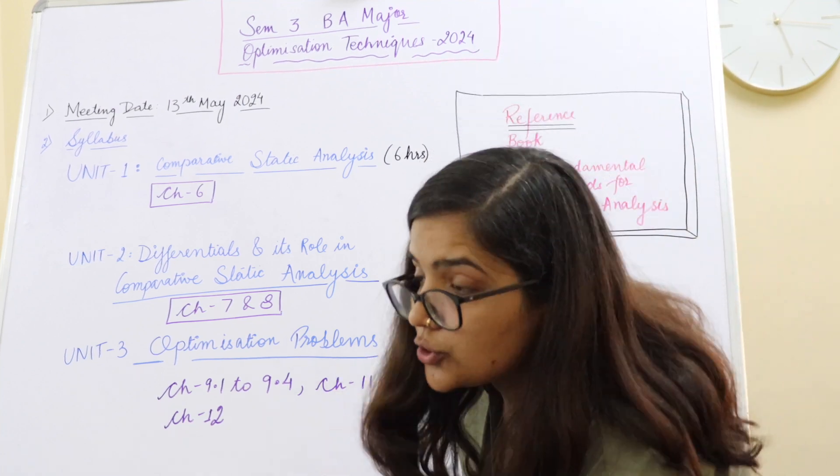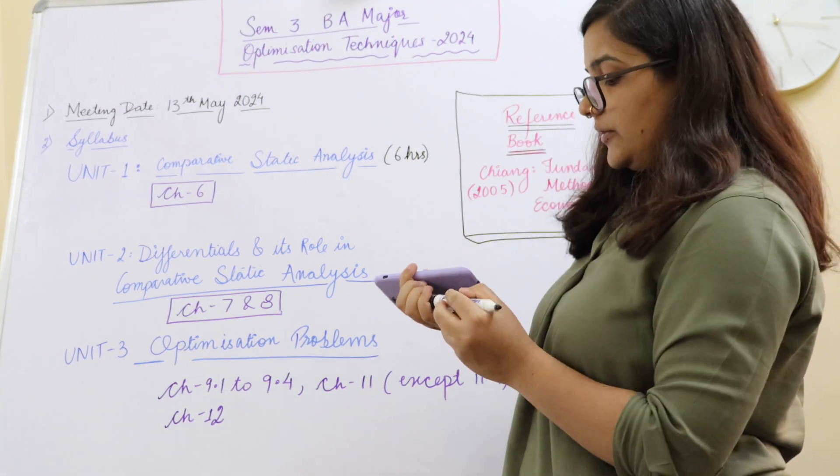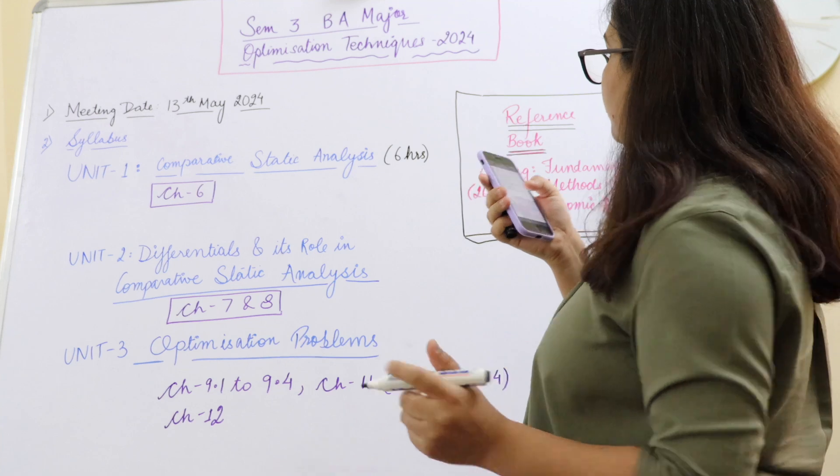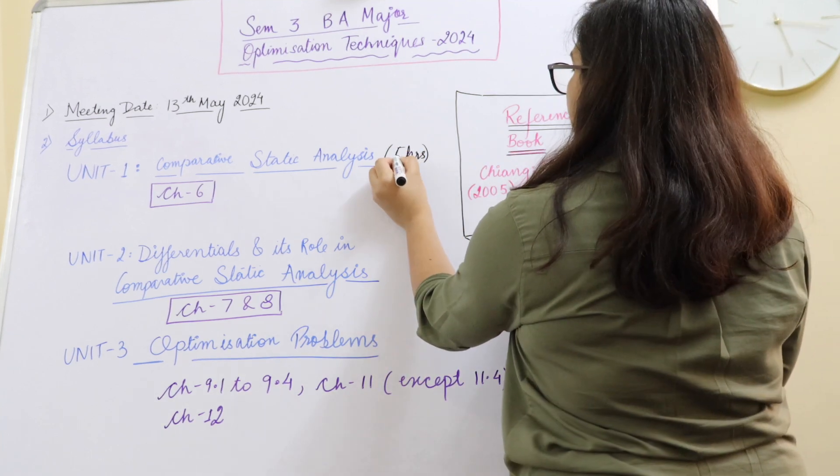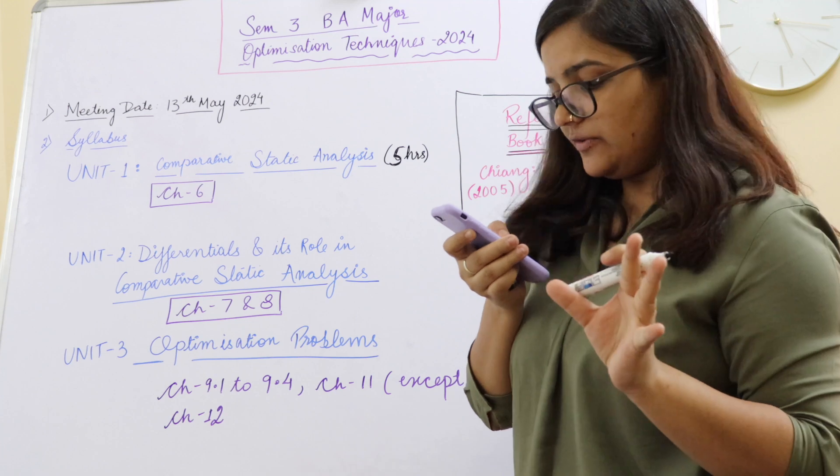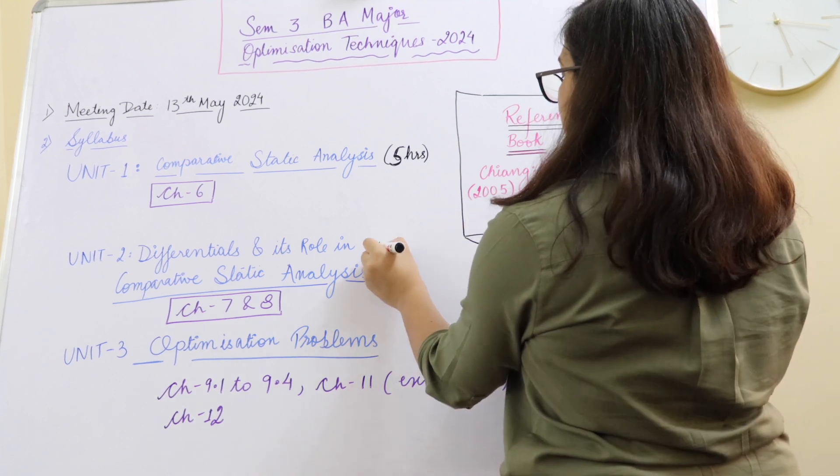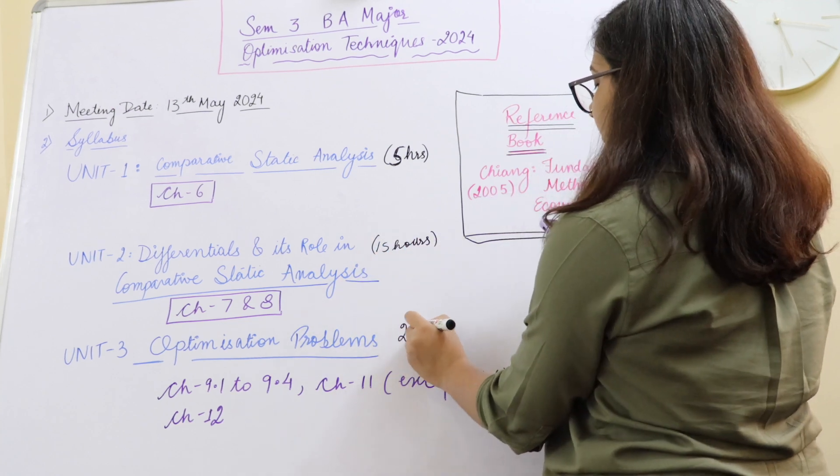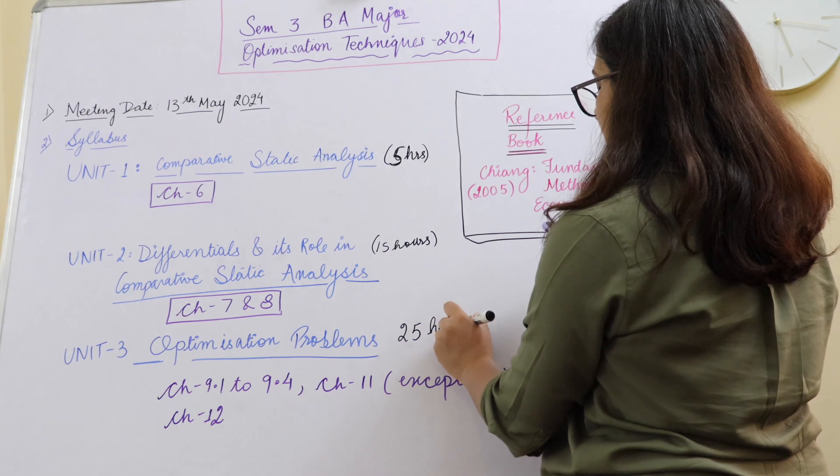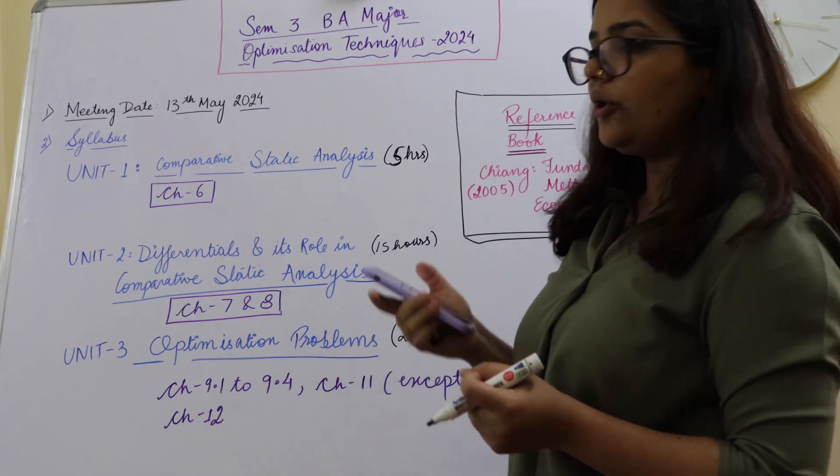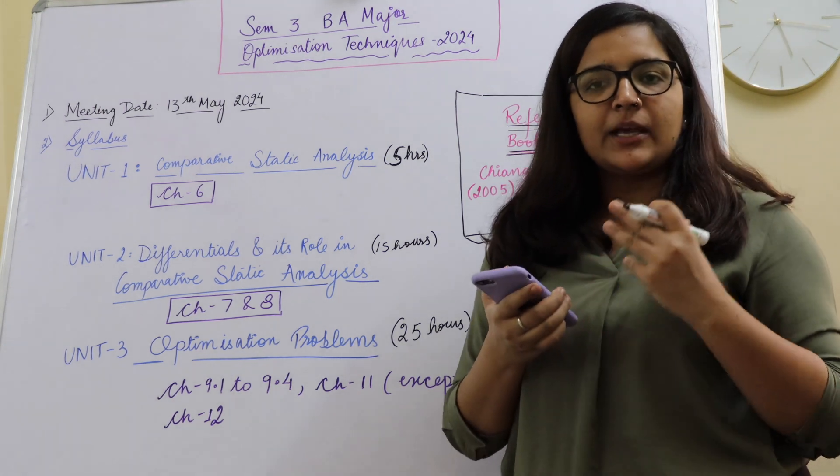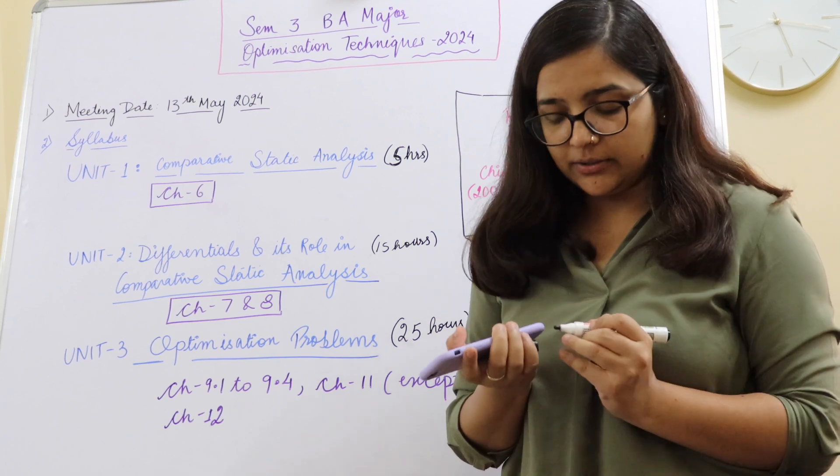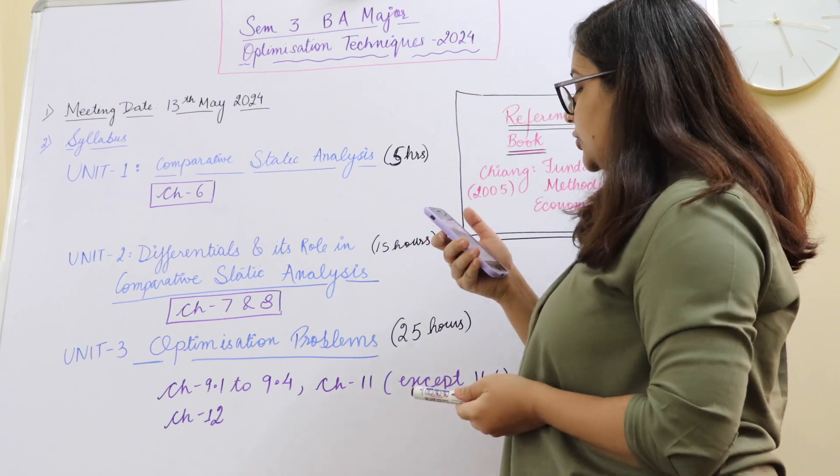Along with that there is one thing which you should remember, which is the timing of specific units that they mentioned. So for first unit they've guided us to follow actually five hours, so five hours you should be following. And here 15 hours timeline is mentioned, and for this particular unit we have been referred 25 hours timeline. So why this is important, because in your exam pattern you have to follow the weightage according to the timings which have been mentioned here.